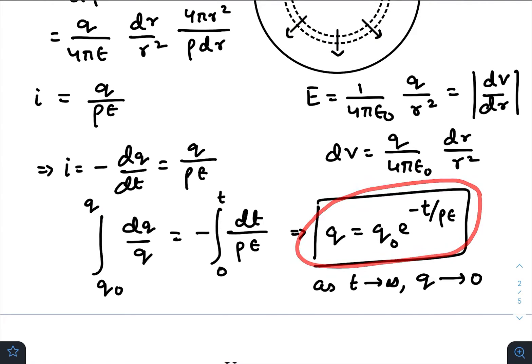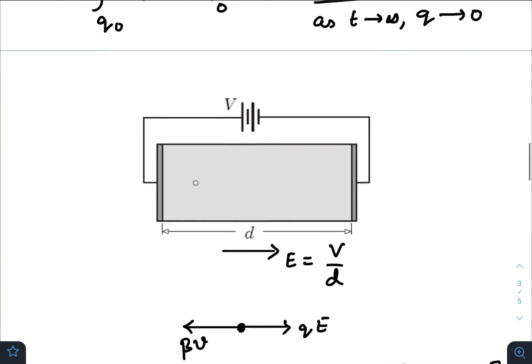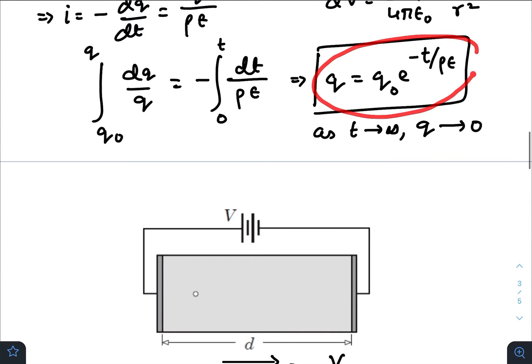After some time t, the charge becomes q. As you can see, it is decreasing exponentially with time. At t tends to infinity, all the charge will be vanished.